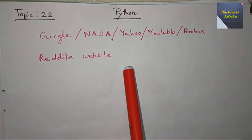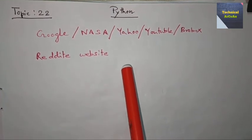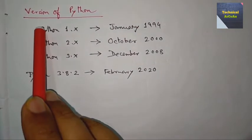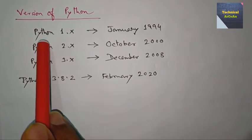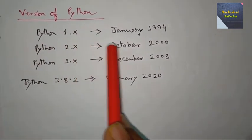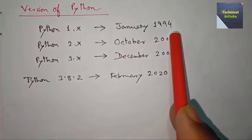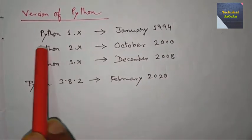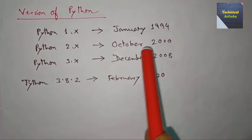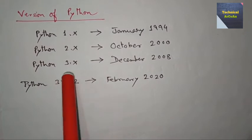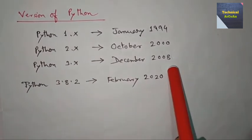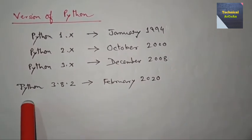Now the versions of Python: first Python 1.x, then Python 2.x released in January 1994, after that Python 3.x released in December 2008.